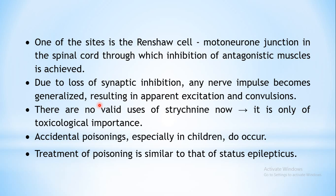The site of action of strychnine is found to be the Renshaw cell–motor neuron junction, located in the spinal cord. Strychnine blocks the action of glycine there, so all synaptic inhibition that keeps neurons inhibited is lost. Whenever any nerve impulse comes to this region, it becomes generalized and results in apparent excitation, and convulsions are precipitated.